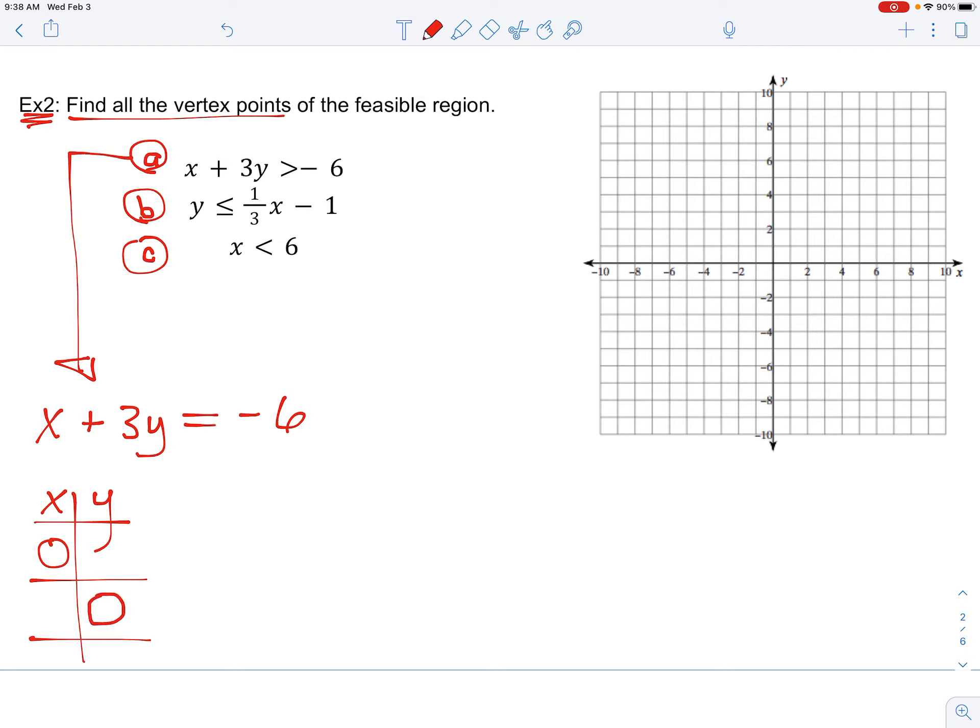When x is zero, it's as if we just cover that one up and solve the equation 3y equals negative 6. That means y is negative 2. When we find the x-intercept, we cover up the y. So it's as if we just cover that one up, make it zero, x equals negative 6. Easy peasy.